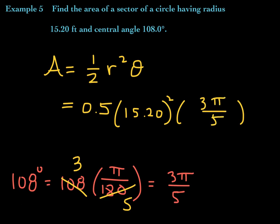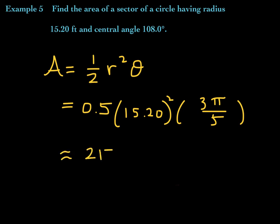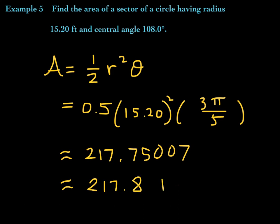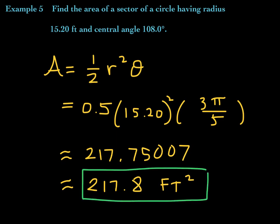Now let's punch all of this into the calculator, using four significant digits. Also, don't forget — you're finding area, so your units are squared units; in this case, squared feet. I'm getting approximately 217.75007, which rounded to four significant digits gives 217.8 square feet. Don't forget square feet. That is the area of the sector of this circle. There are many cool applications dealing with the area of a sector, like irrigation systems, watering a lawn, painting a wall, and many others.